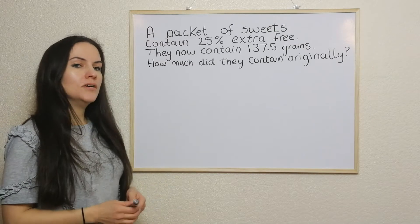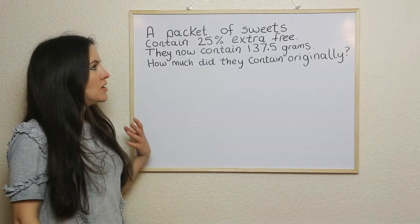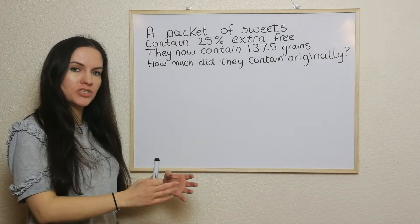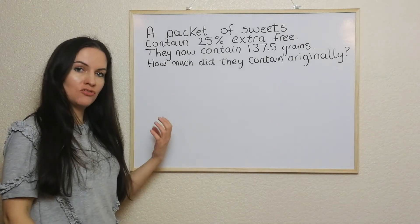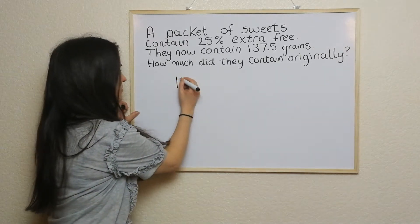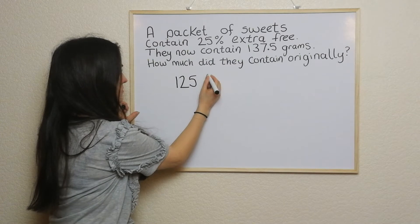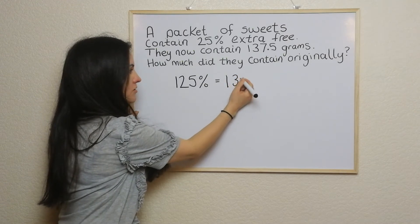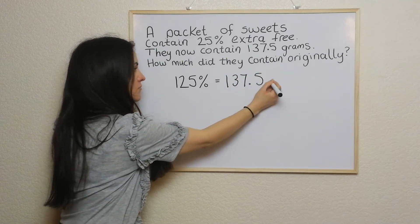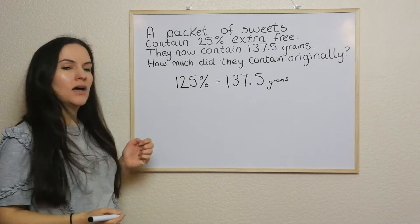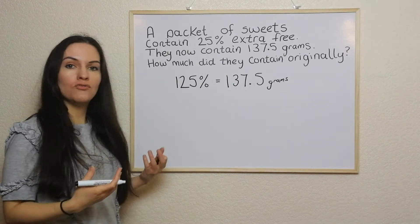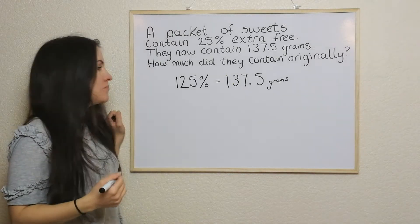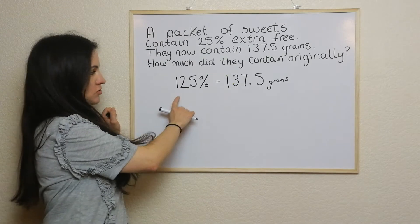So what you need to think about is: what percentage do we have now? If there's 25% extra free, the original packet of sweets would be 100%, but because we've got 25% extra free, we've got 125%. So 125% equals 137.5 grams. To get 1%, we just divide through by 125.